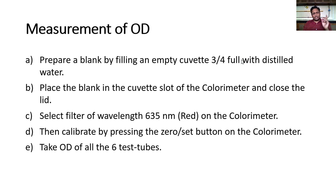After the test tubes are ready, prepare a blank by filling an empty cuvette 3/4 full with distilled water. Place the blank in the cuvette slot of the colorimeter and close the lid. This is zeroing of the colorimeter, water blanking the colorimeter. You have to select the filter of wavelength 635 nanometer. Blanking of colorimeter has to be done for each wavelength. You can't do blanking once and if you vary the wavelength, you again have to zero it for the particular session. Select the wavelength and then calibrate by pressing the zero button on the colorimeter.